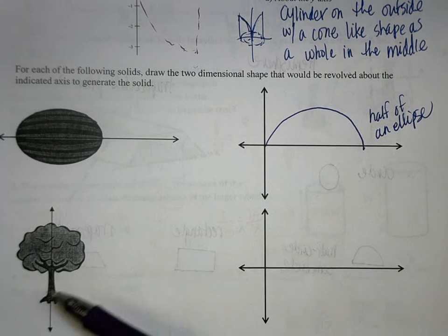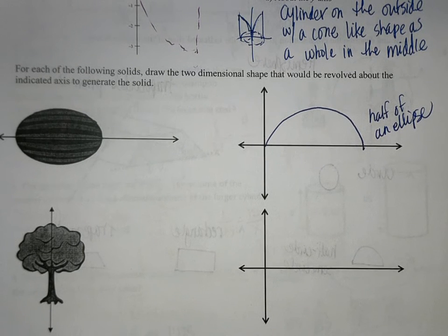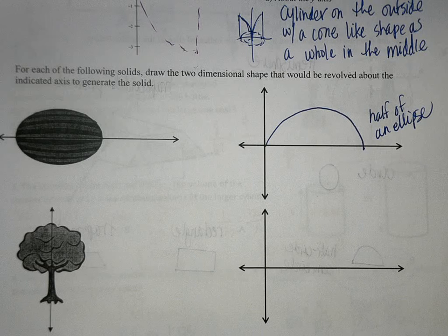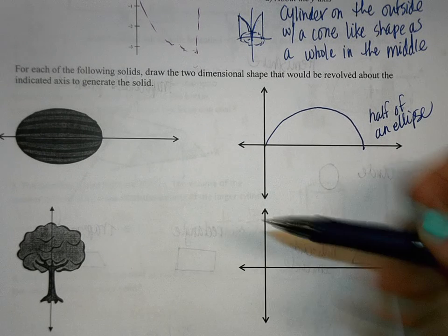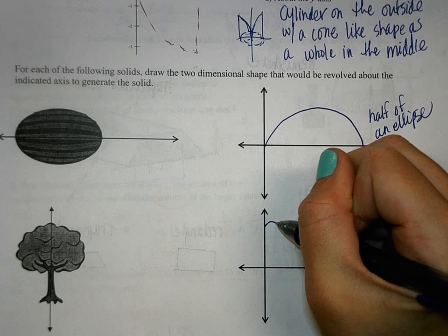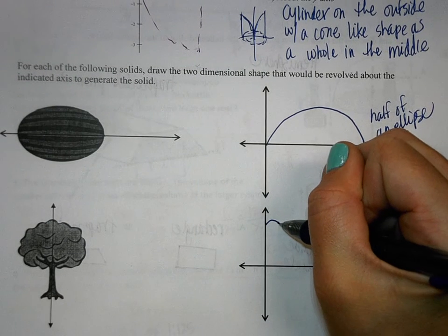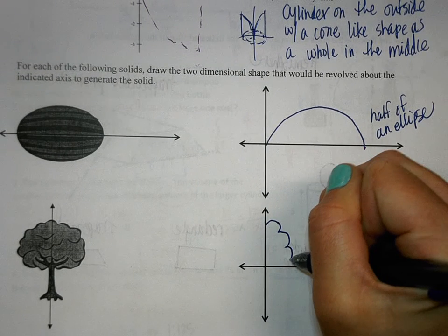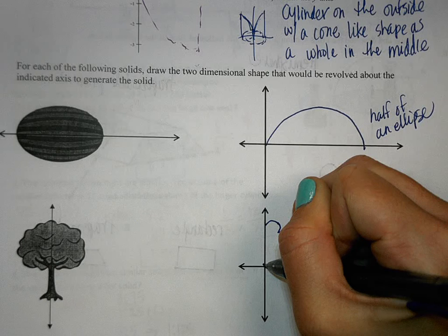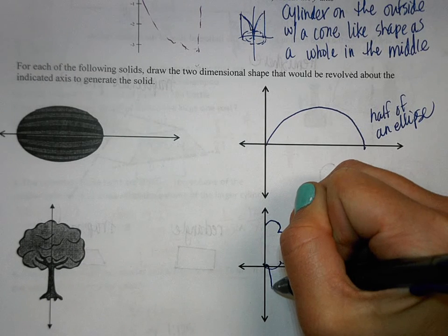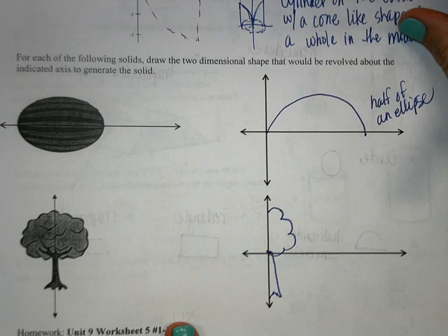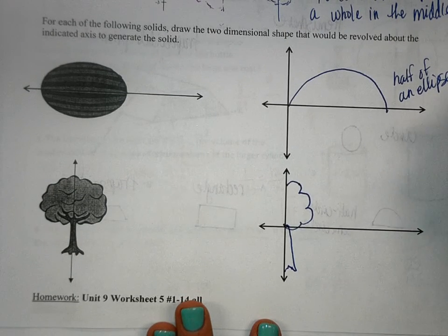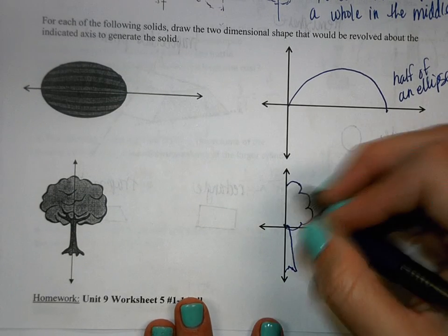Okay, so now we have this tree. It's not an actual shape. All we would do is draw—and notice here they're doing the y-axis. You're just going to draw a picture or try to, like me. I always just try my best, but that's the figure that I would rotate that would make that tree.